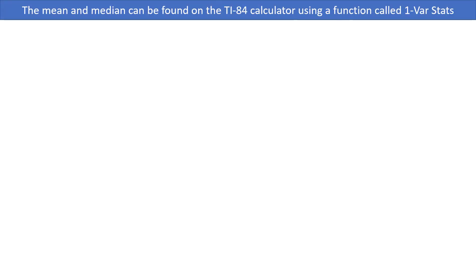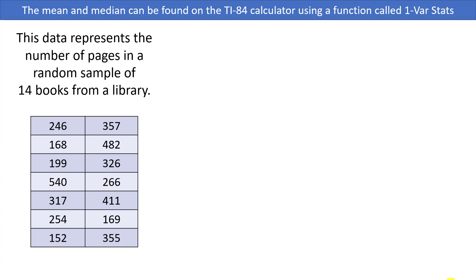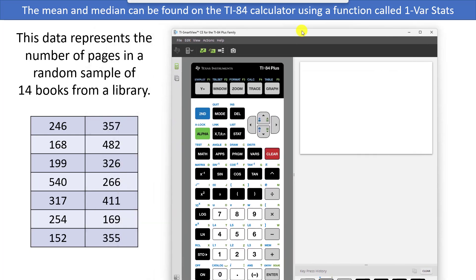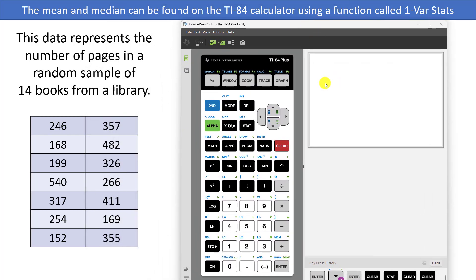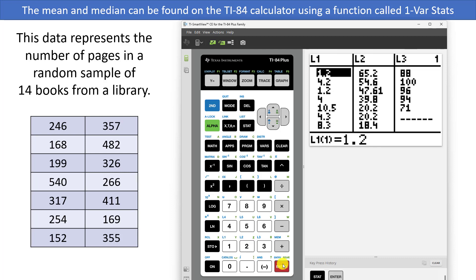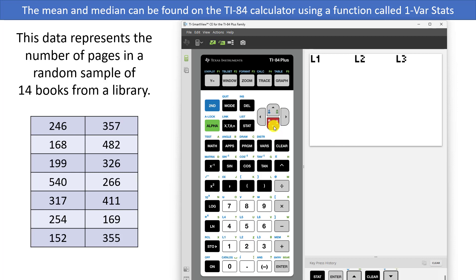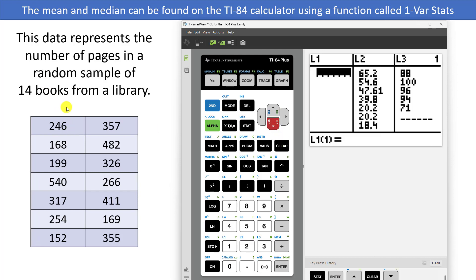The mean and median can be found on the TI-84 calculator using a function called one-var stats. Here's some data representing the number of pages in a random sample of 14 books from a library. Let's grab our TI-84 calculator and run the one-var stats. First, we need to type these numbers into our stat list. We can do this by pressing stat and then enter, clear out the first list by scrolling up over it, pressing clear, and then the down arrow. Then go ahead and type all the numbers into the first list.